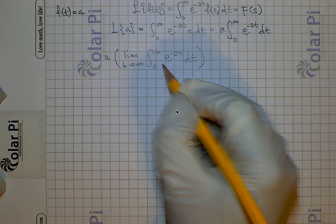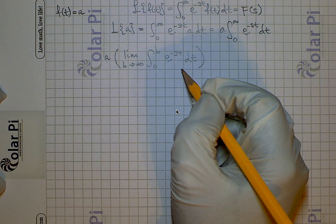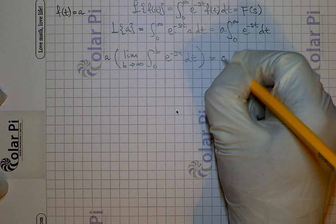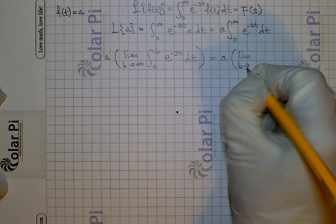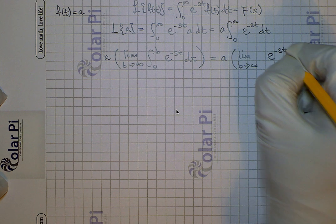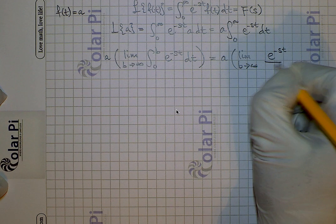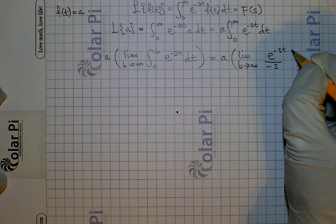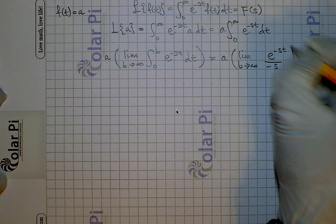The antiderivative of e to the negative st is just negative 1 over s times e to the negative st. So what we have here is the same as a times the limit as b goes to infinity of e to the negative st divided by negative s. Since we've taken the antiderivative and we have limits of integration, we need to evaluate at 0 and at b.